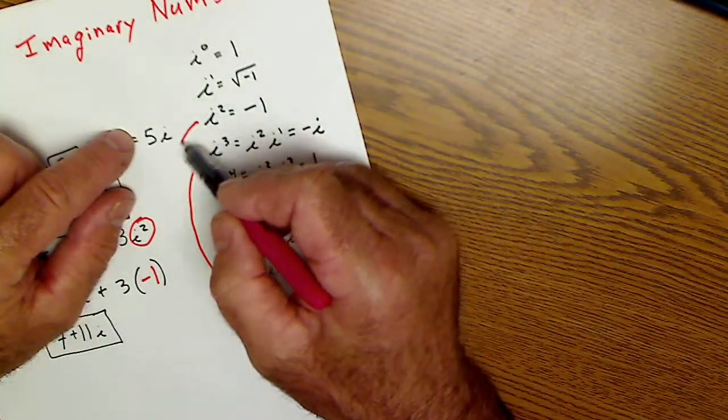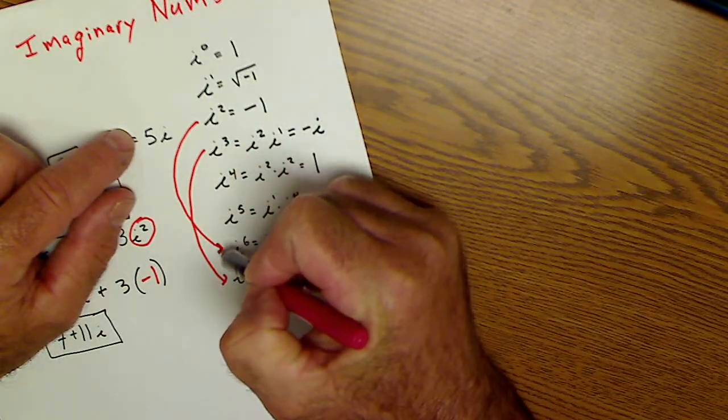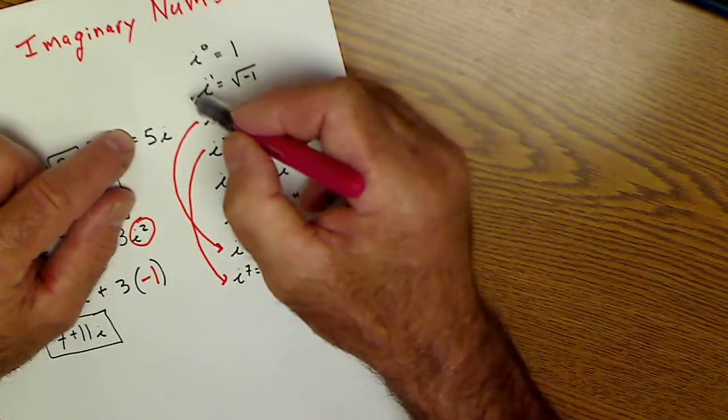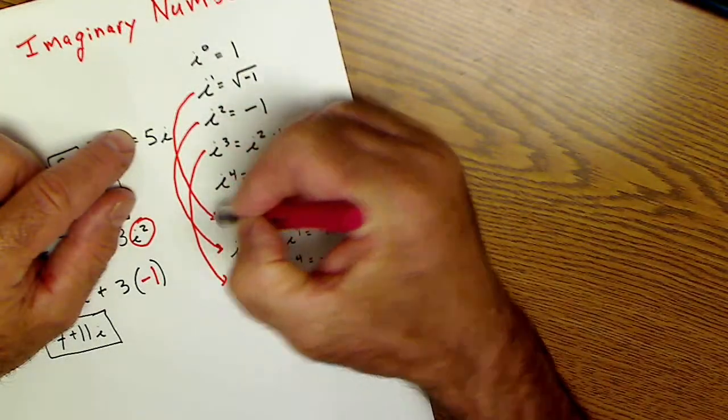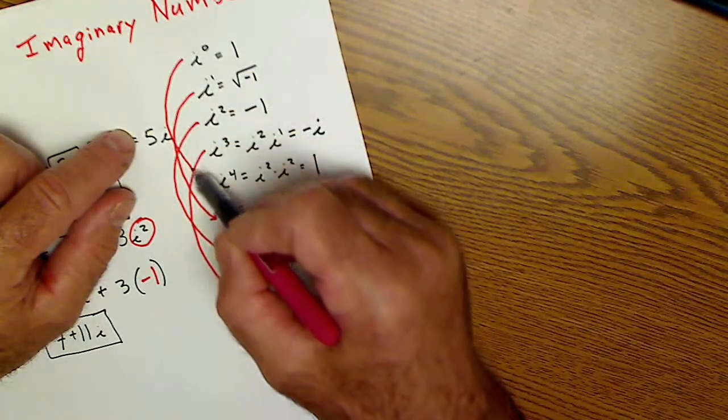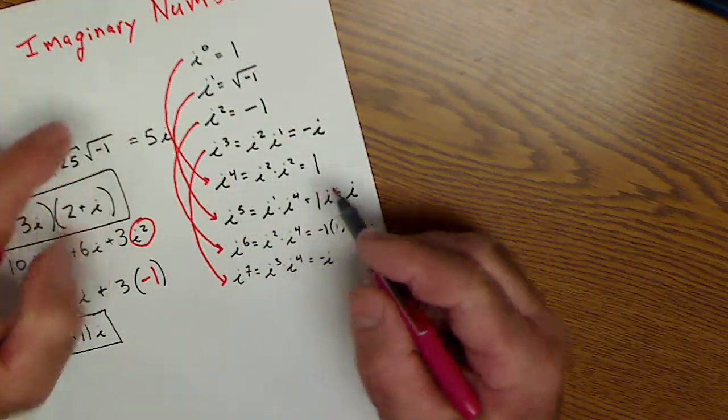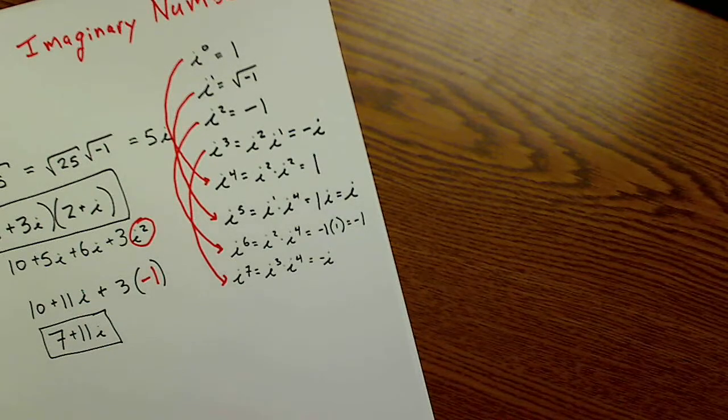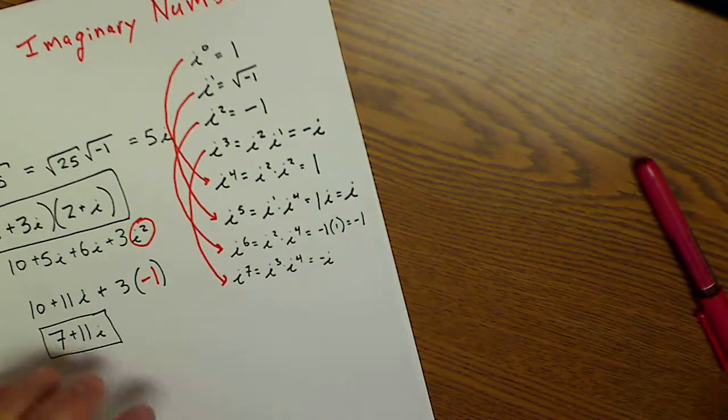i squared, i to the second, i to the sixth are the same. i to the first and i to the fifth are the same. i to the zero and i to the fourth are the same. So I could see this thing repeats itself every four times.